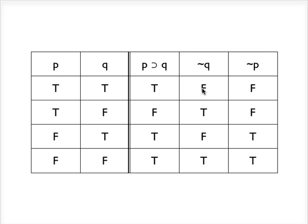First row: are both of the premises true? No. Second row: are both of the premises true? No. Third row: both of the premises true? No. Fourth row: both of the premises true? Yes. But in that case the conclusion is also true. Because there's no row where both of the premises are true and yet the conclusion is false — there were only four rows, and on none of those rows were both premises true and the conclusion false — the argument is valid.